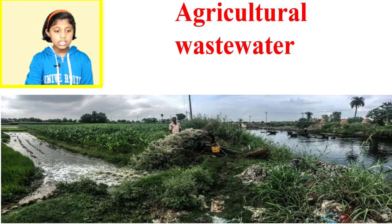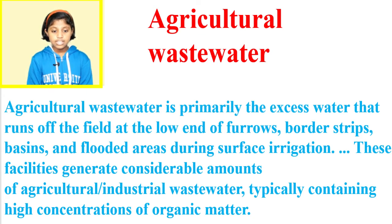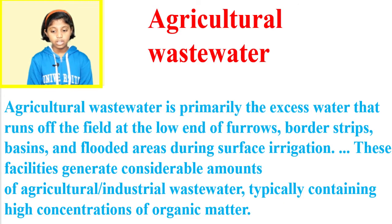Agricultural wastewater is primarily the excess water that runs off the field at the low end of furrows, border strips, basins and flooded areas during surface irrigation. These facilities generate considerable amounts of agricultural industrial wastewater, typically containing high concentrations of organic matter.